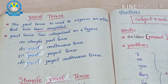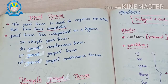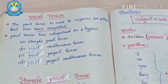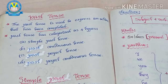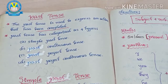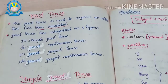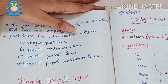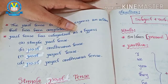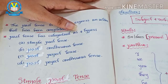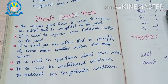What are those four types? The first one is simple past tense, the second is past continuous tense, the third is past perfect tense, and the fourth is past perfect continuous tense.